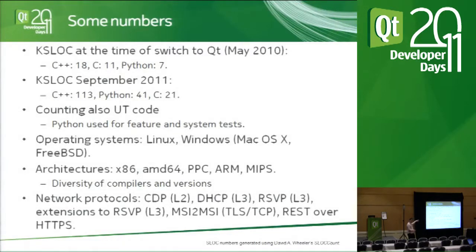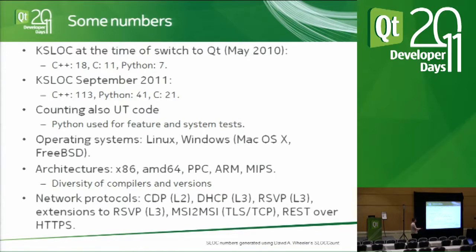The network protocols — the languages we talk to the networks — include: CDP, Cisco Discovery Protocol, used for neighbor and location information; DHCP for auto-registration; RSVP, a typical protocol for bandwidth reservation, with non-standard extensions for troubleshooting media transmission; MSI-to-MSI, a TCP-based secure channel for two of our daemons to communicate; and most recently, a REST interface over HTTPS based on certificates, allowing you to manage any daemon running in the corporate network.